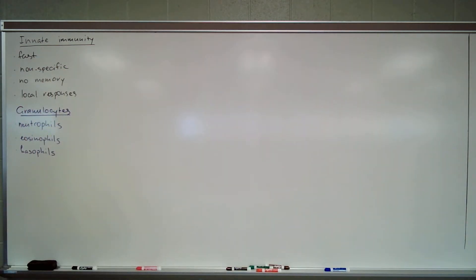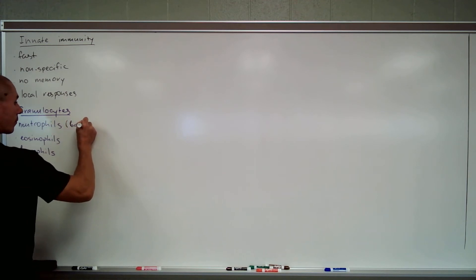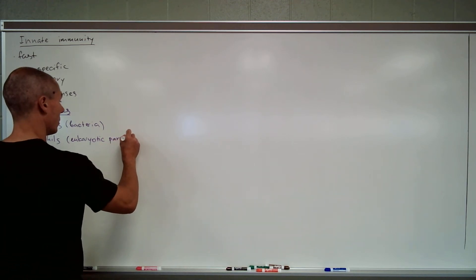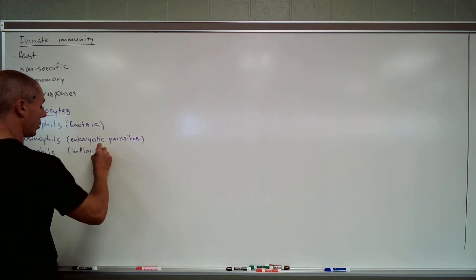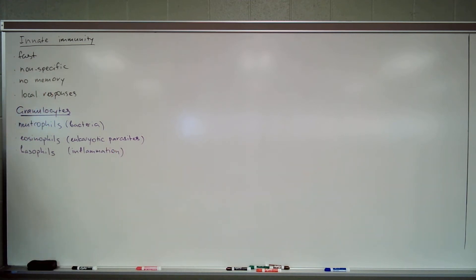So neutrophils, the main target is bacteria. Eosinophils, eukaryotic parasites like fungi, protozoa, or helminths. Basophils, the general role is to promote inflammation.